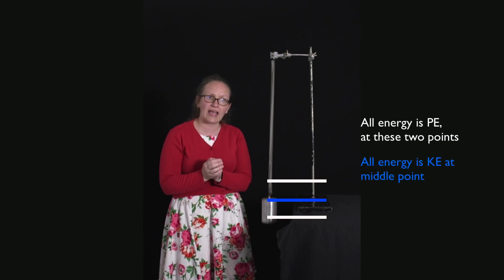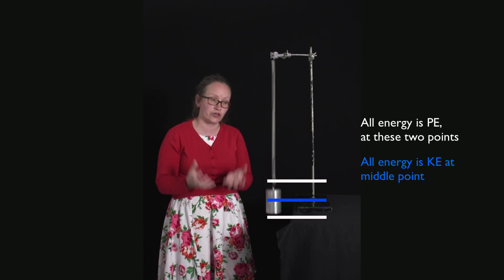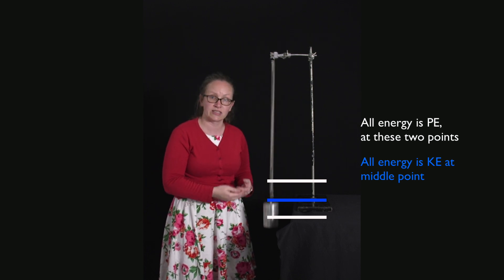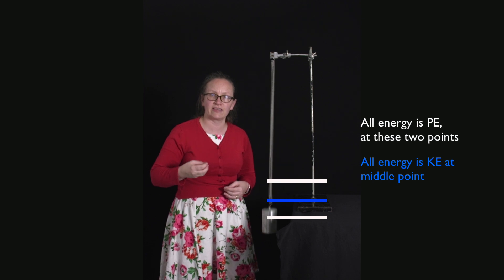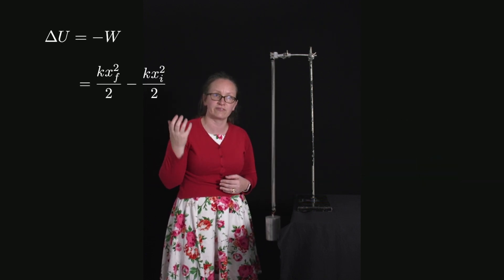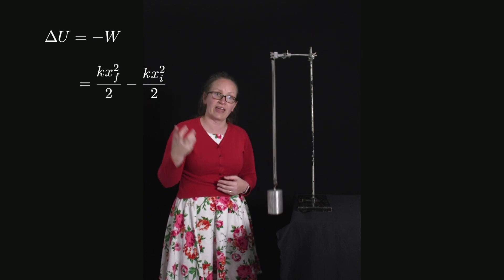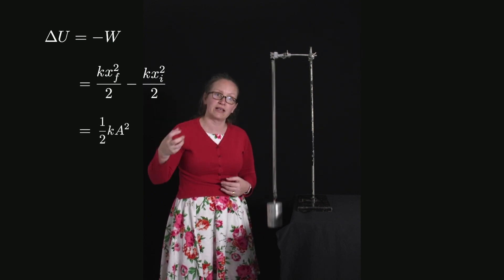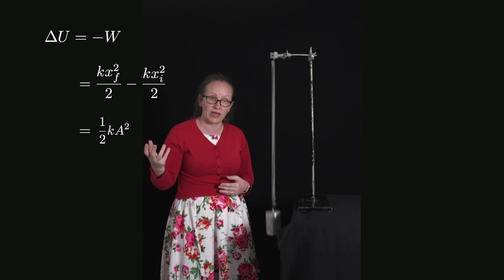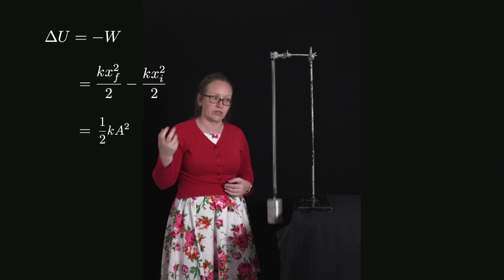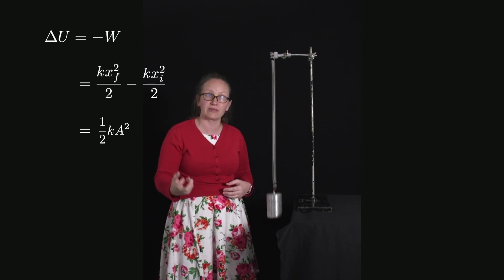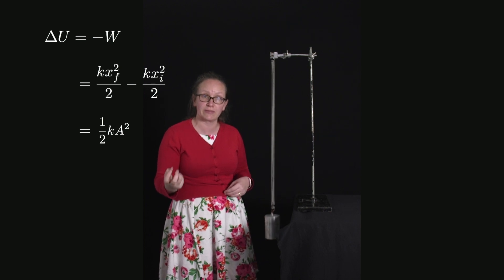We can calculate the potential energy stored in the spring when I displace it because we've said that the change in the potential energy is equal to 1/2 k x_final² which is 1/2 k a² in this case, minus 1/2 k x_initial². In this case x_initial was zero because it was at its equilibrium position, so the displacement from equilibrium is zero.